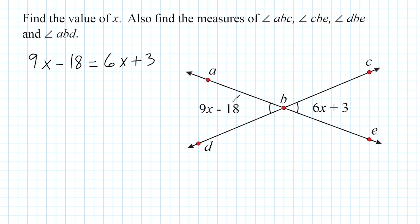Whatever expressions you have to represent each one of those sides, you have to make a statement that they are equal to each other, because that is always true with vertical angles. Now we need to solve for X by getting X on one side of our equation. We're going to take the term 6X — because it's positive, we write the inverse, negative 6X.